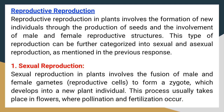Sexual reproduction. Sexual reproduction in plants involves the fusion of male and female gametes, reproductive cells, to form a zygote, which develops into a new plant individual. This process usually takes place in flowers, where pollination and fertilization occur.